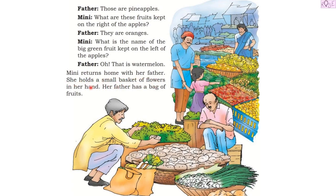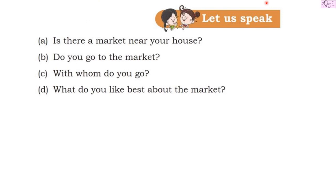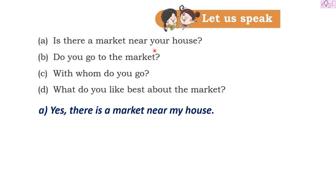Mini returns home with her father. She holds a small basket of flowers in her hand, and her father has a bag of fruits. That was the day Mini spent at the marketplace. Have you gone to the market? What are the things that you see there? Let us speak — Question A: Is there a market near our house?